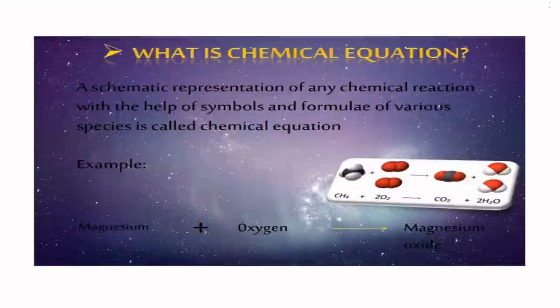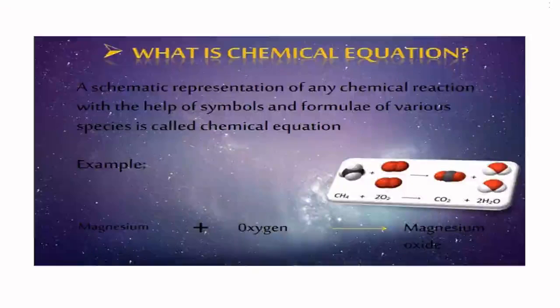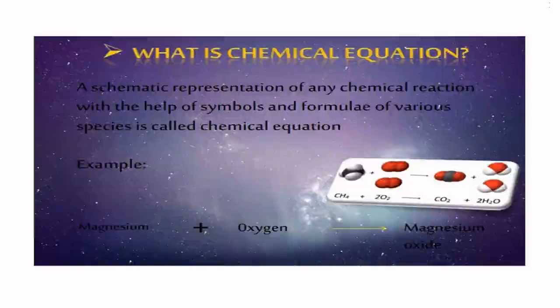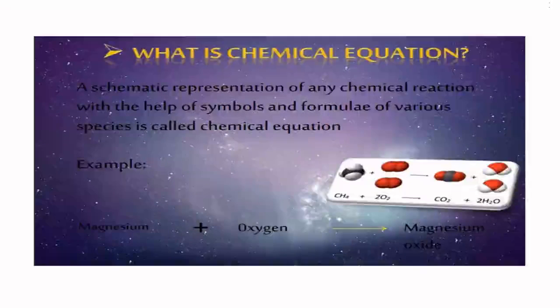What is a chemical equation? A schematic representation of any chemical reaction with the help of symbols and formulas of various species is called a chemical equation. Example: magnesium plus oxygen gives magnesium oxide.